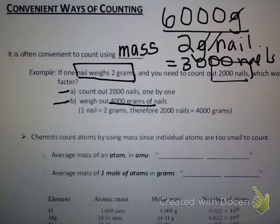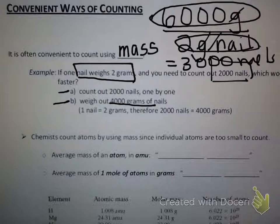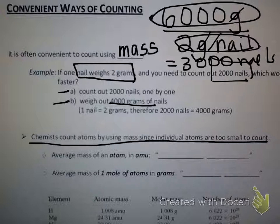Likewise, if a chemist knows how much an entire sample of an element weighs and they know how much one individual atom of that element weighs, they can figure out how many atoms they have. Chemists count by using mass all the time because individual atoms are too small. When we count using mass there are different units we can use. If we're talking about the average mass of a particular atom, atoms are very small, so we count in terms of the amu unit — the atomic mass unit, which we discussed in chapter five.